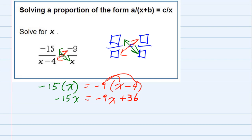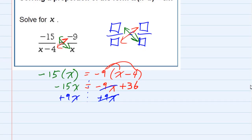From here, I need to get the x's on one side of the equation. I'm going to move them to the left by adding 9x to both sides, because they're equal. What that gives me,